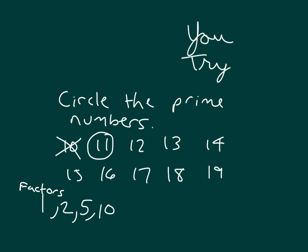11 should have been circled. You can only get 11 by going 1 times 11. We can't have 12 because the factors of 12 would be 1, 2, 3, 4, 6, and 12. In fact, we'll cross out all of our even numbers. Our only even prime number is 2. Now, there's one more we can cross out.